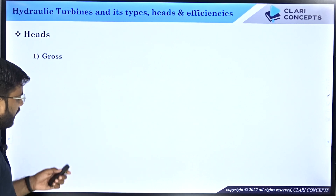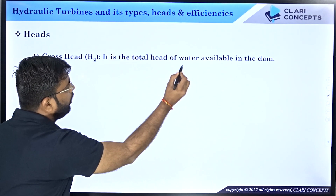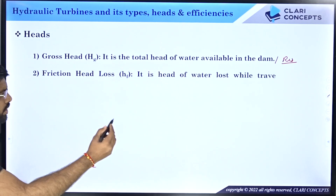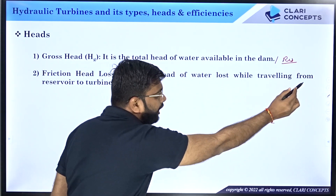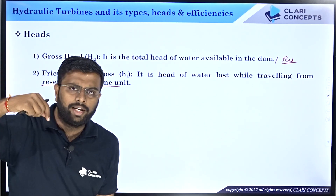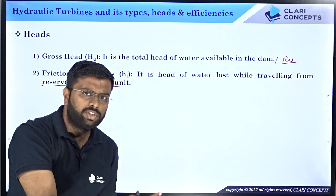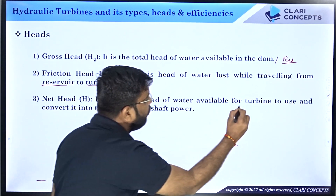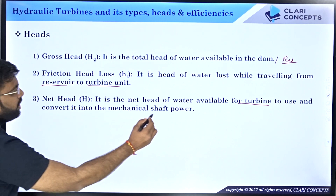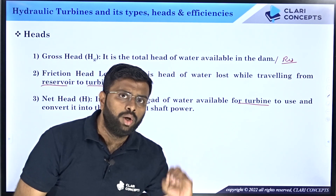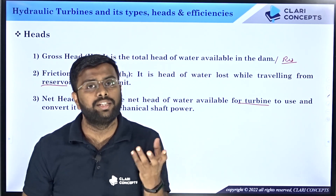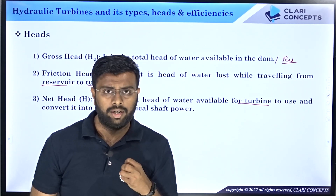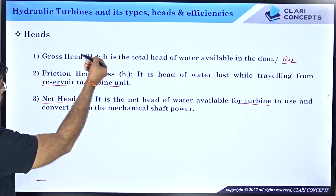So to summarize: gross head HG is the total head of water available in the dam or reservoir. Friction head loss HF is the head of water lost while traveling from the reservoir to the turbine unit through the penstock. And net head H is the head of water available for the turbine to use and convert into mechanical shaft power, which equals gross head minus friction head. That is clear.